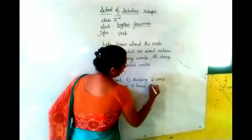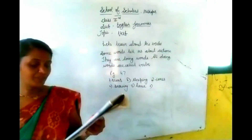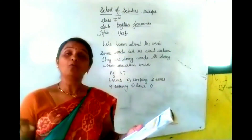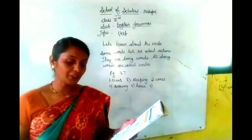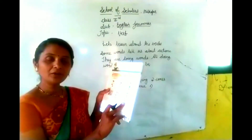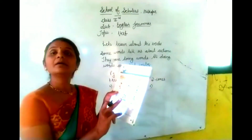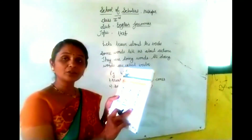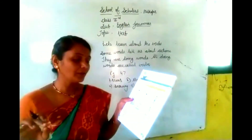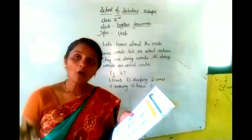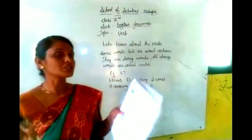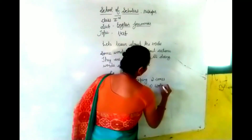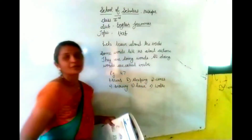So Sanju and Rajesh dance very well. Next: the old man walks slowly. Old man is walking — walk is an action. So: the old man walks slowly.